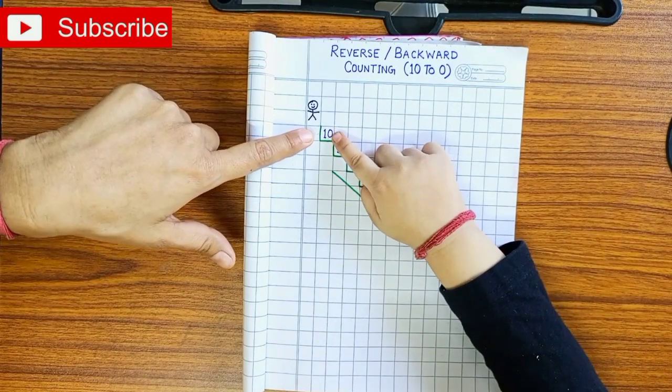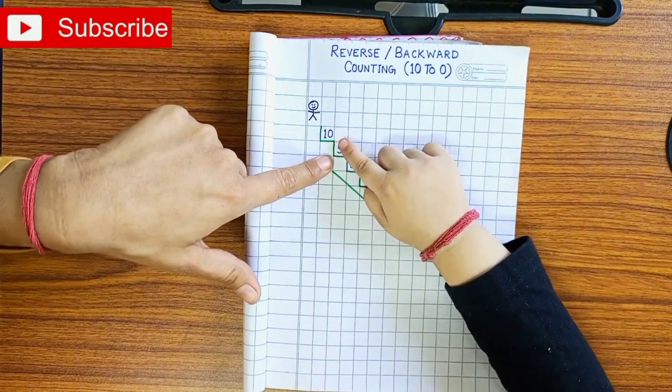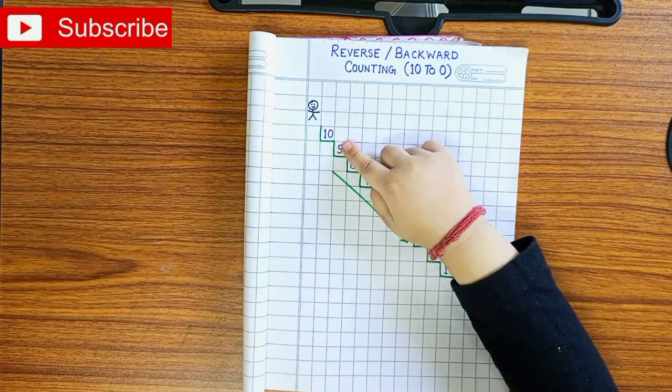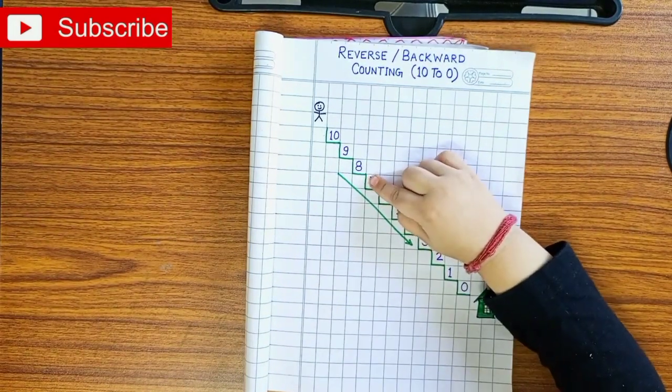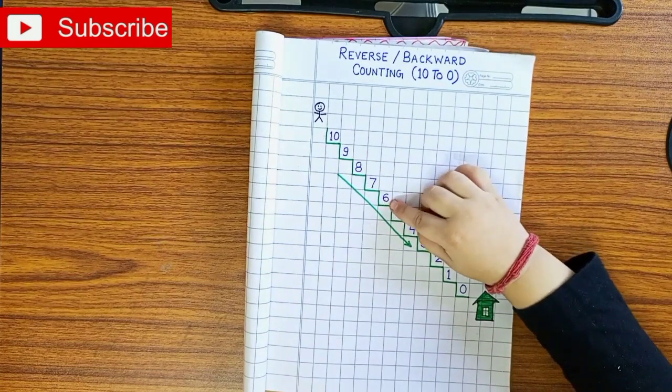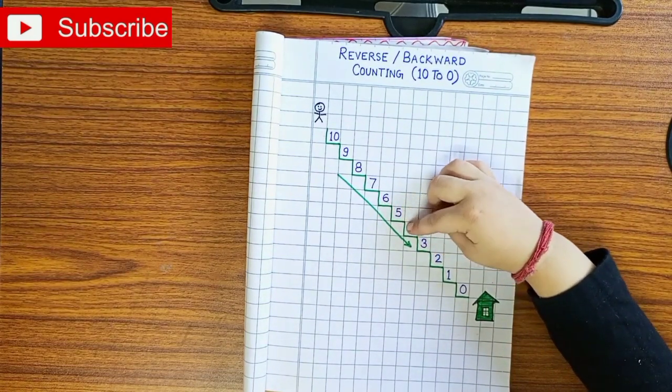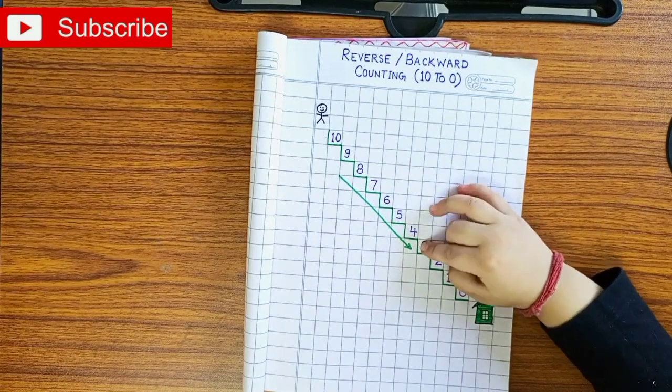This is number 10. Can you put your finger on number 10? Yes. Then you will come back on number 9. Then 8, 7, 6, 5, 4, 3.